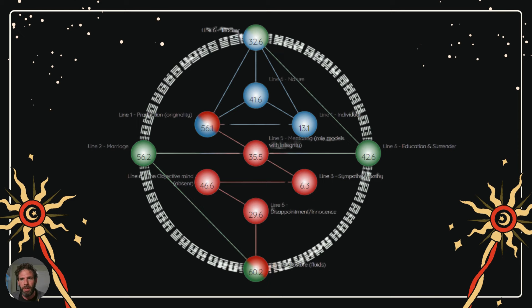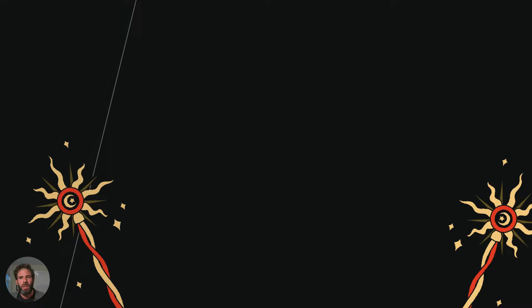Here you can see that I have a line six for my life's work — that very top sphere where it says 32.6 — and also a six line for 42.6, the sphere all the way over to the right. That top sphere is keynoted 'teacher.' It's no mistake that I'm here giving you this presentation. The sixth line at the sphere of evolution is keynoted 'education and surrender.' So in order to teach, I must first become educated, and I have to surrender because it takes a long time to acquire the knowledge needed. That requires sacrifice and surrender.